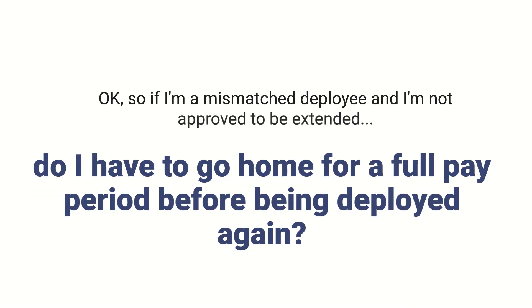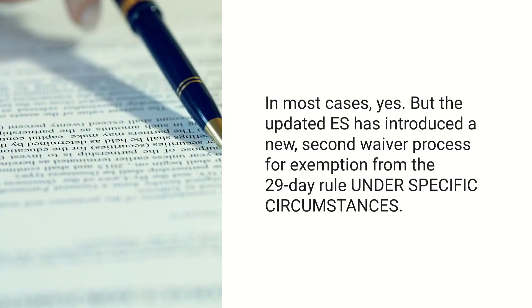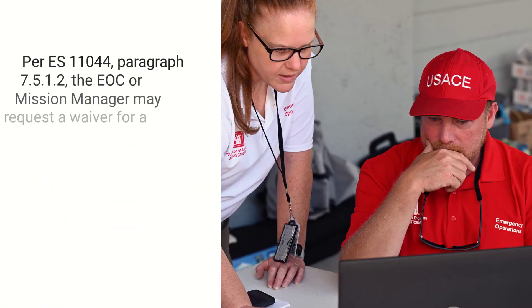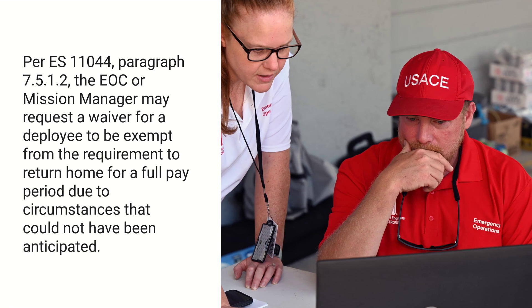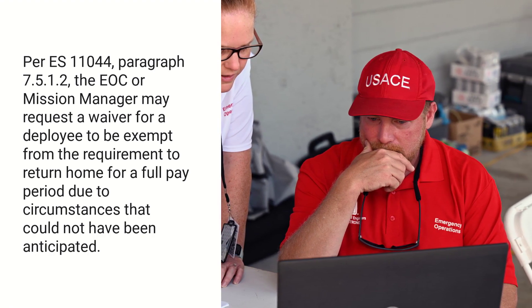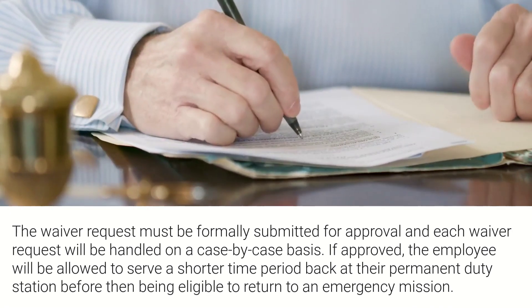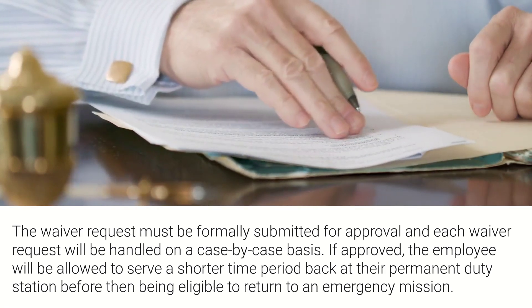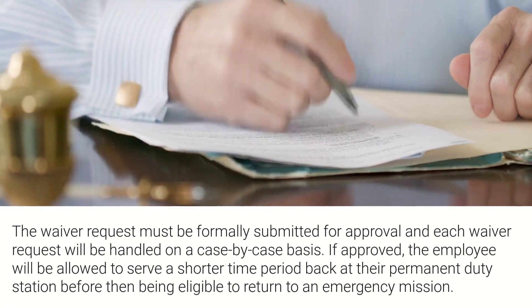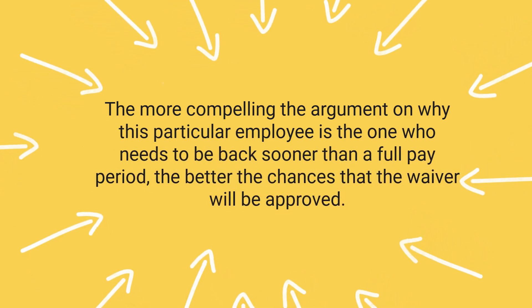So if I'm a mismatched deployee and I'm not approved to be extended, do I have to go home for a full pay period before being deployed again? In most cases yes, but the updated ES has introduced a new second waiver process for exemption under the 29-day rule under specific circumstances. Per ES-11044, paragraph 7512, the EOC or Mission Manager may request a waiver for a deployee to be exempt from the requirement to return home for a full pay period due to circumstances that could not have been anticipated. The waiver request must be formally submitted for approval and each waiver request will be handled on a case-by-case basis. If approved, the employee will be allowed to serve a shorter time period back at their PDS before then being eligible to return to an emergency mission. The more compelling the argument on why this particular employee needs to be back sooner than a full pay period, the better the chances that the waiver will be approved.